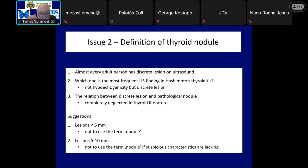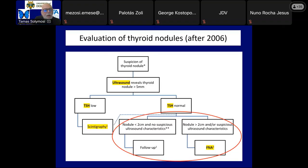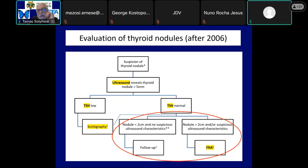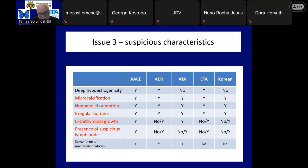Hashimoto's thyroiditis is the real problem, as the most common ultrasound finding is the presence of discrete hypoechoic lesions, found in more than 90% of patients. Now let's jump to the end of the algorithm and the indication of FNA. All guidelines published after 2006 rely on suspicious signs in nodules between 10 and 20 mm.